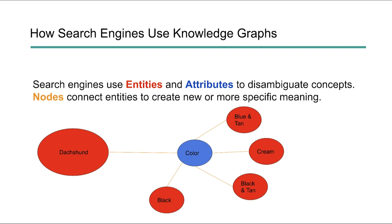So how do the search engines use it? Search engines look for entities and attributes to disambiguate concepts. They use nodes to connect entities and create either new meaning or more specific meaning. So a dachshund has an attribute called color, and each of those colors could also be entities — like black is a specific color, black and tan, and so on. The orange things in the diagram are nodes. This is a simplistic representation, but it makes a lot of sense when broken down this way. Entities have attributes; attributes are connected by nodes — this helps computers understand the meaning.